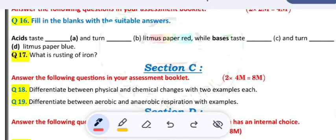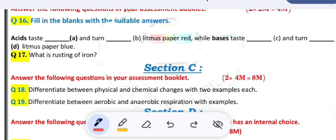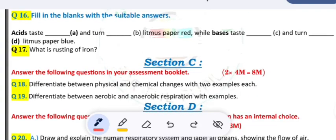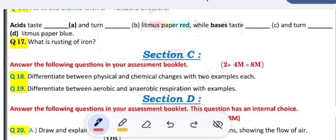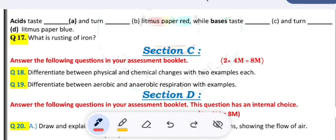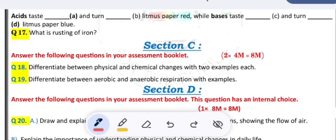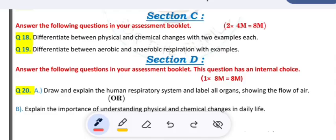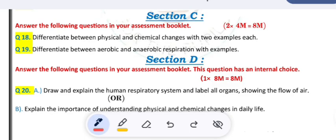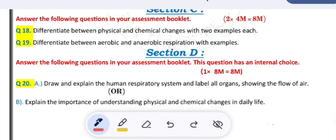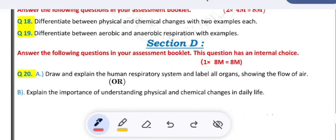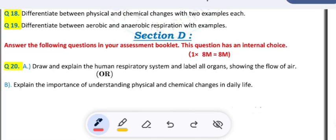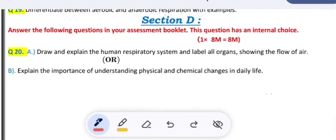Sixteenth question: fill in the blanks with the suitable answers. Acids taste dash and turn dash litmus paper red, while bases taste dash and turn dash litmus paper to blue. Seventeen: what is rusting of iron? Section C: answer the following questions in your assessment booklet. Two questions are given, each one carries four marks. Eighteenth: differentiate between physical and chemical changes with two examples each. Nineteenth: differentiate between aerobic and anaerobic respiration with examples.